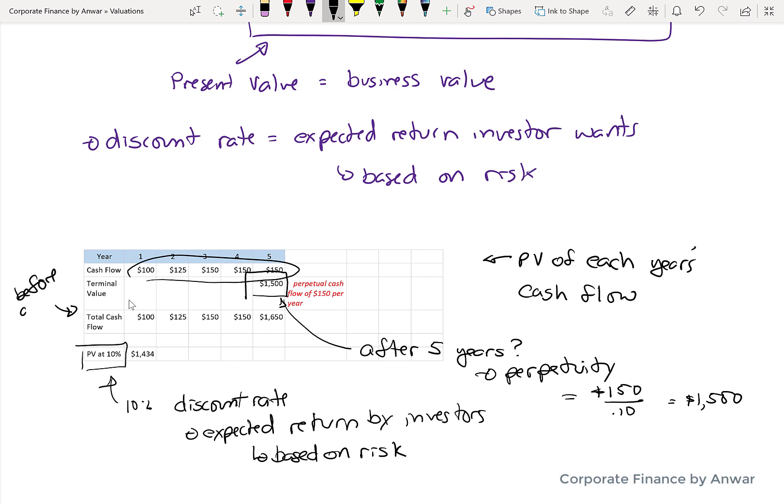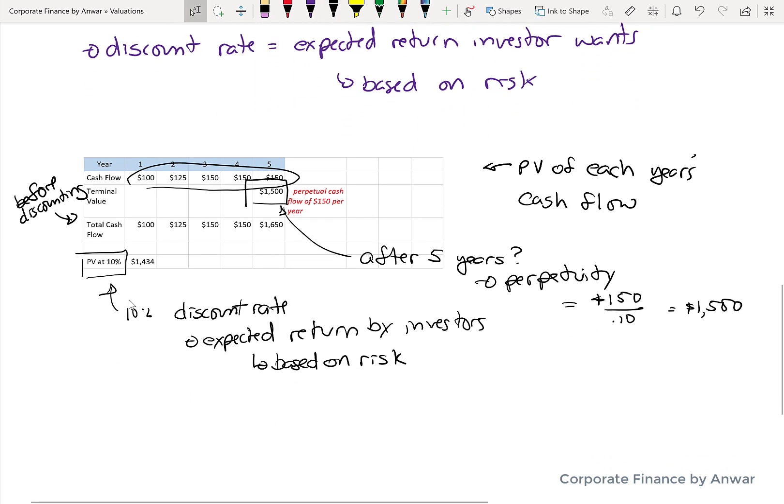So we've got $1,500 as a year five cash flow plus the other five years of cash flow. And if you discount all of that cash flow back to today's dollar values, it comes to $1,434. So if this is in millions, this company would be worth $1.43 billion. And that's the enterprise value of the company.